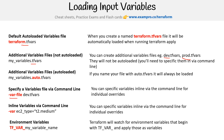Lastly, we have environment variables. These start with TF_var_ followed by the variable name. This is very common when you are using code build servers or runtimes to run Terraform in a CI/CD automated way.